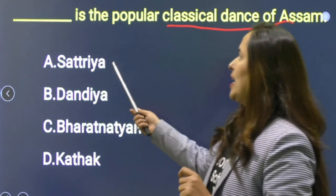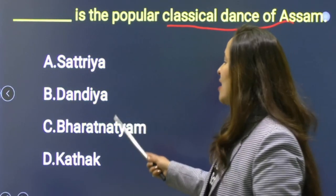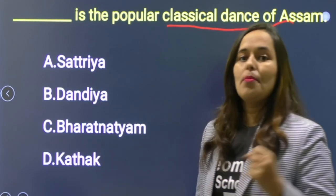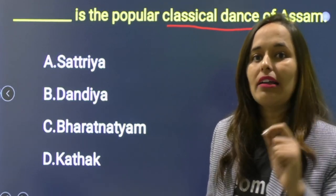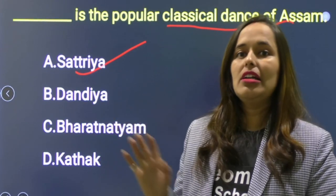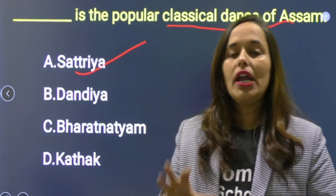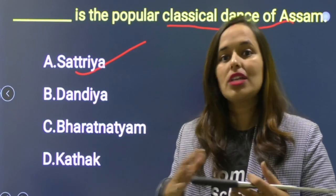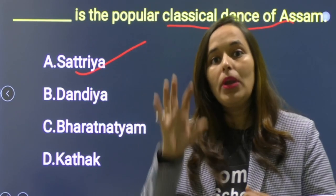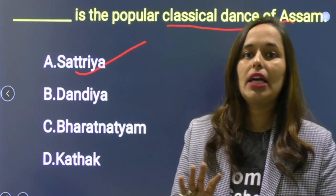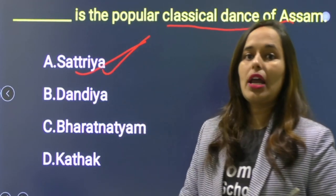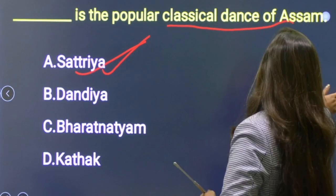Next question: Assam का एक classical dance है — वो किस नाम से जाना जाता है? Options: Sattriya, Dandiya, Bharatanatyam, Kathakali. Dandiya — Gujarat का folk dance है। Bharatanatyam — Tamil Nadu का, Kathakali — Kerala का classical dance है। Sattriya is the correct answer — यह Assam का classical dance है। Option A is correct.